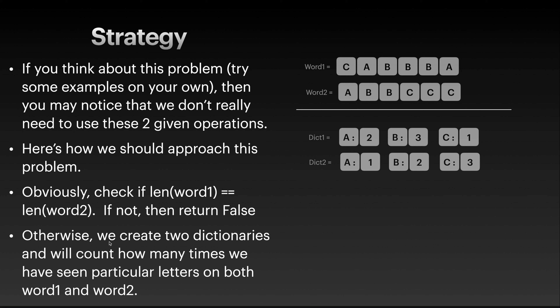Otherwise, we create two dictionaries — call them dict1 and dict2. The key in each dictionary is a letter, and the corresponding value is the total frequency — the total number of times you've seen that letter in the word. For dict1, we have 'a: 2', meaning we see 'a' twice in word one, 'b: 3' for three times, and 'c: 1' for just once.